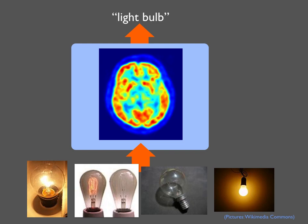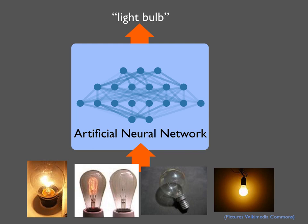Half a century ago, computer scientists started wondering: can we build an artificial neural network, an artificial machine that can be as flexible as your brain? An artificial neural network is composed of neurons, each of which holds a single number at any given moment in time. They are connected, and the connection strengths can be changed during training. Input is fed into the neurons at the input layer and processed in a sequence of steps until you reach the output layer. For image recognition, the output would be the label.